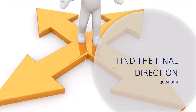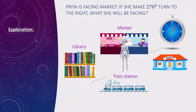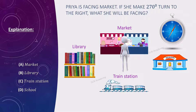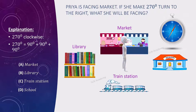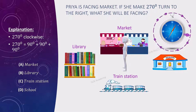Question 4: Find the final direction. Priya is facing the market. If she makes a 270-degree turn to the right, what will she be facing? The market is north, library is west, train station is south, and school is east. 270 degrees equals 90 + 90 + 90 degrees clockwise. After three right turns from north, she faces west — the library. The answer is Option B.